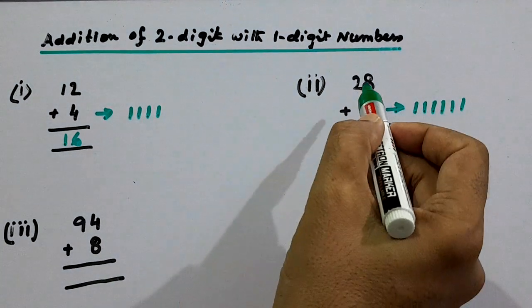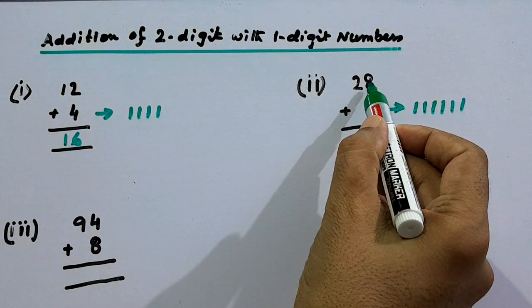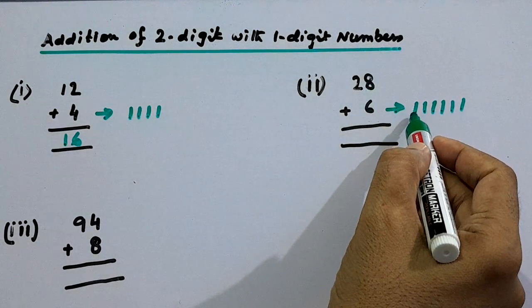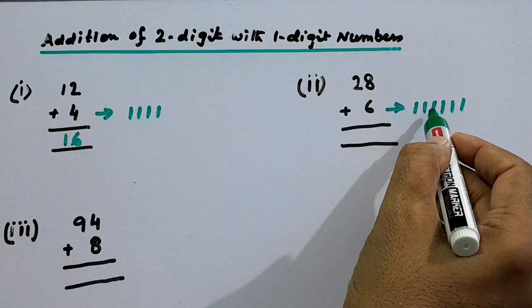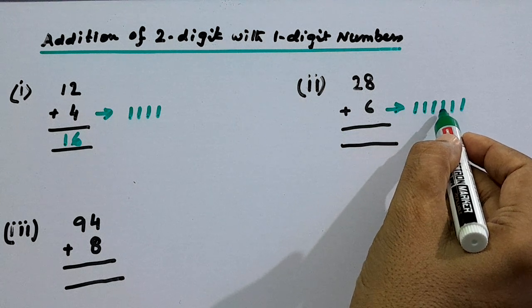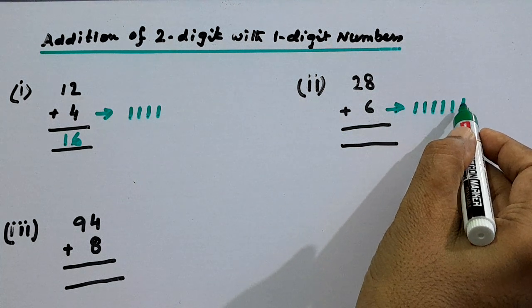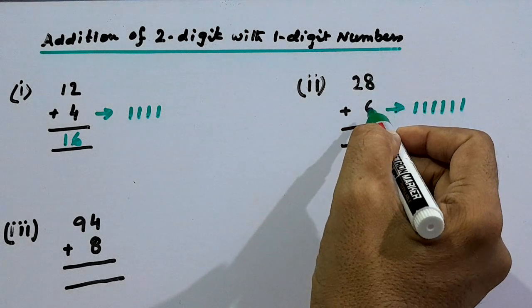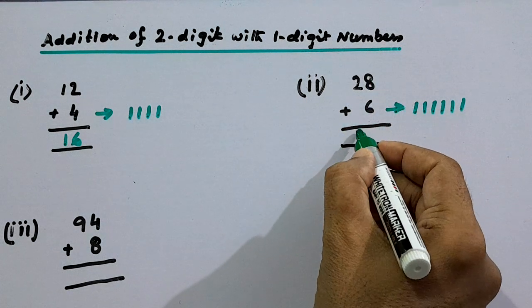Now after 28, the next number is 29, then 30, 31, 32, 33, 34. So 28 plus 6 is 34.